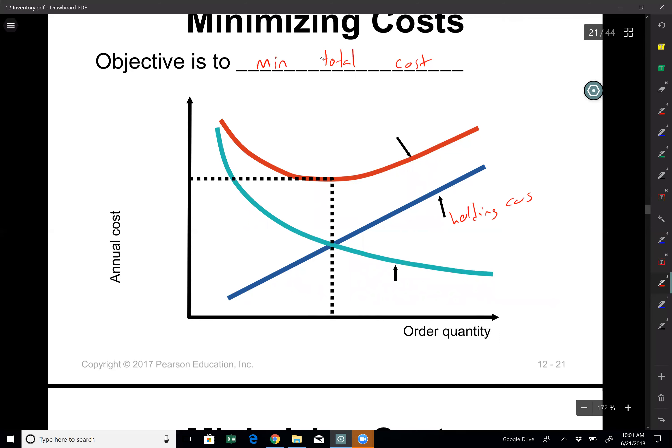As you see the holding cost is a linear line here and it increases when I increase my order quantity. And my order cost is a non-linear line here and it decreases when I increase my order quantity. Again the reason is that if I order more per order basically I will order less frequently.